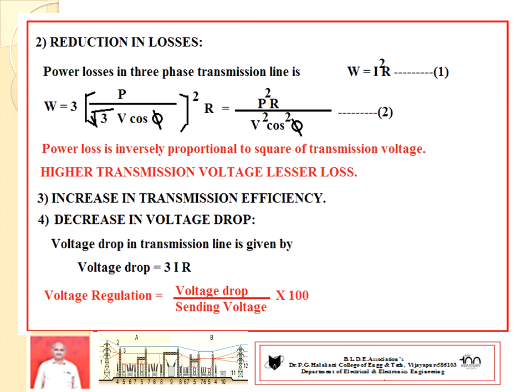Advantage number two: reduction in losses. Power losses in a three-phase transmission line equal 3I²R. For a single-phase system it is I²R; for three-phase it is 3I²R (equation 2). Substituting the current value, it becomes clear that transmission loss is inversely proportional to the square of the transmission voltage. Hence, selecting a high voltage results in less transmission loss.